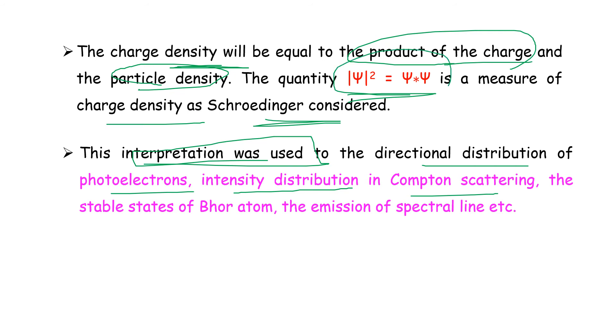The quantity |ψ|² = ψ*ψ was used in the interpretation of photoelectron intensity distribution in Compton scattering. Compton scattering is one of the derivations we are going to study.